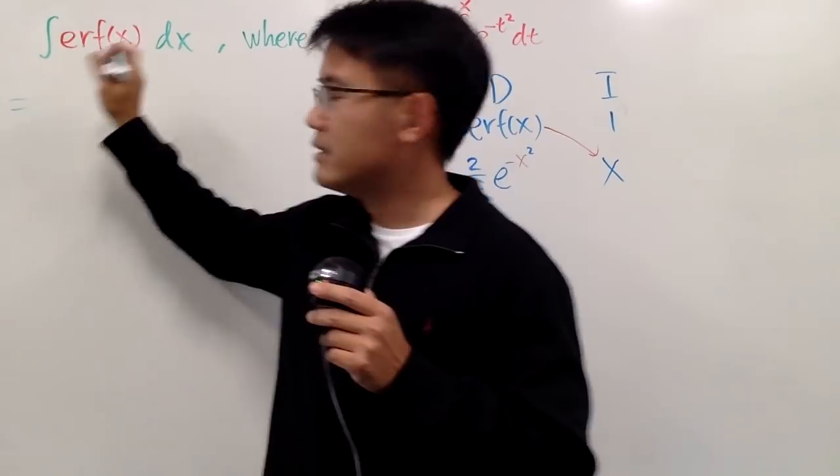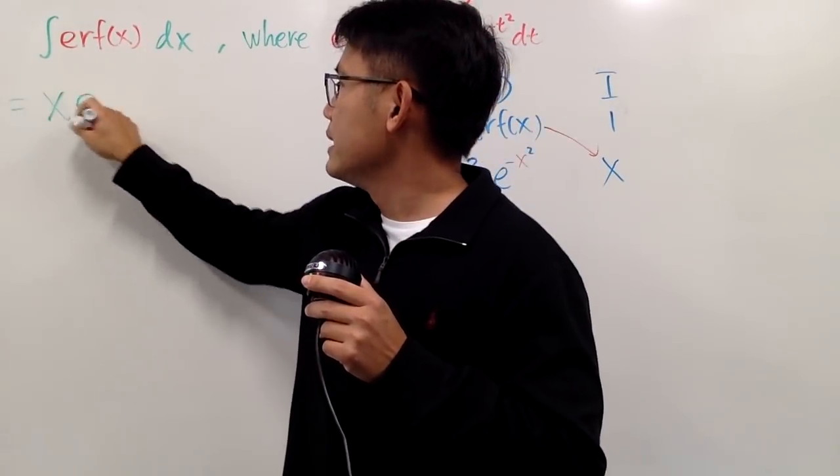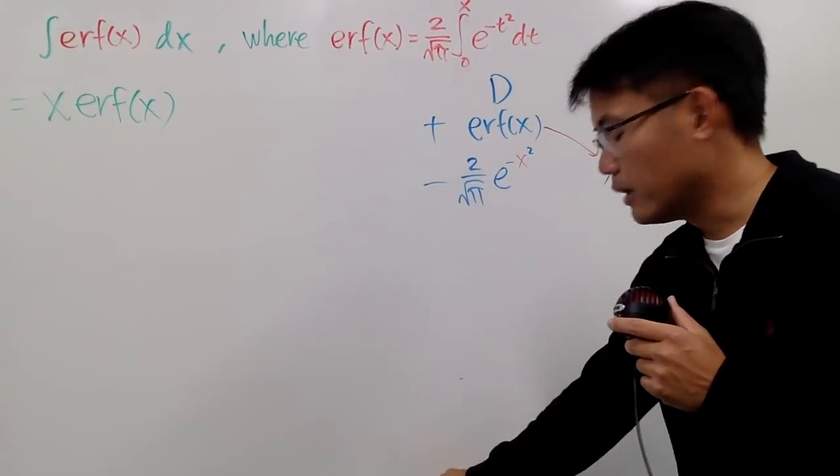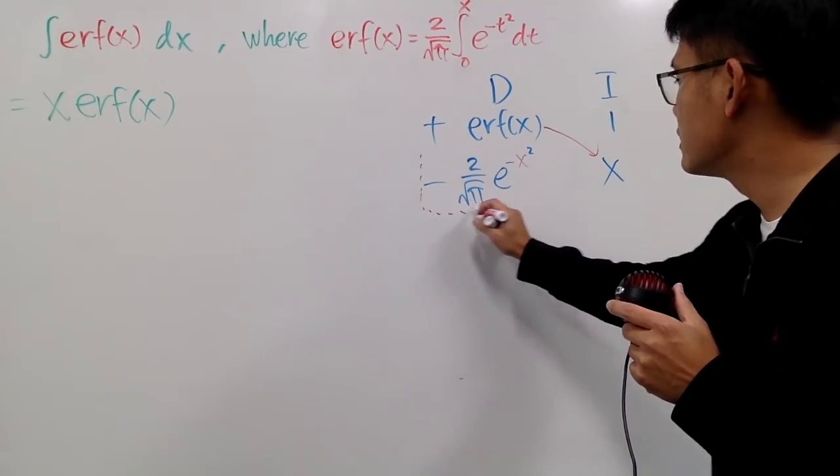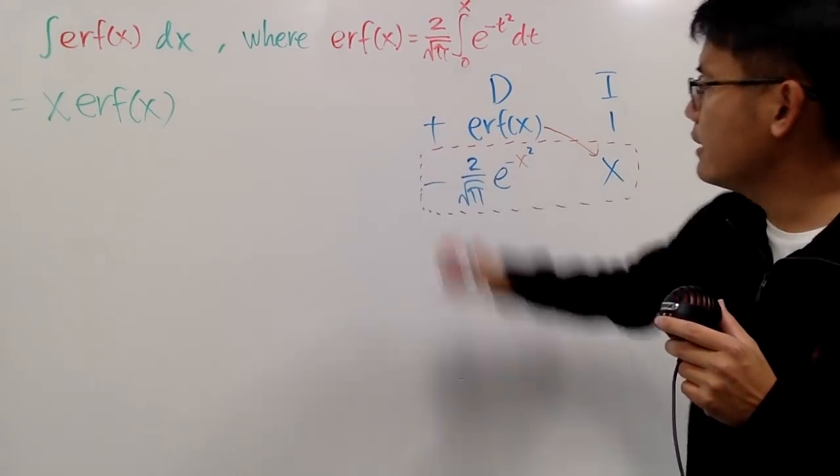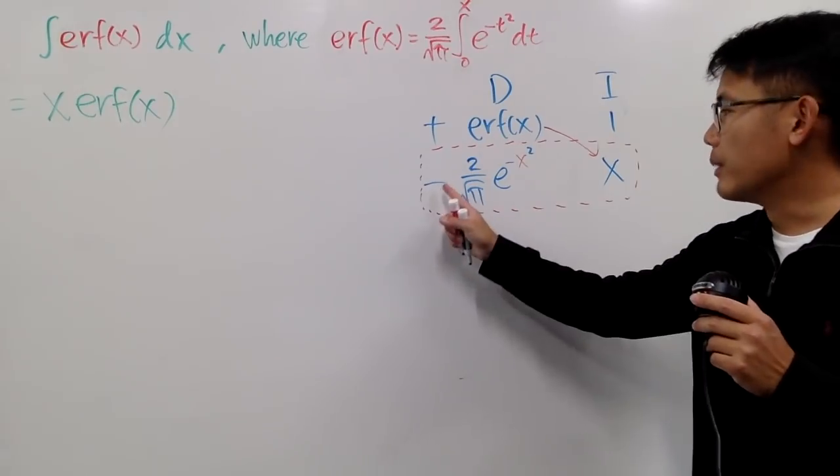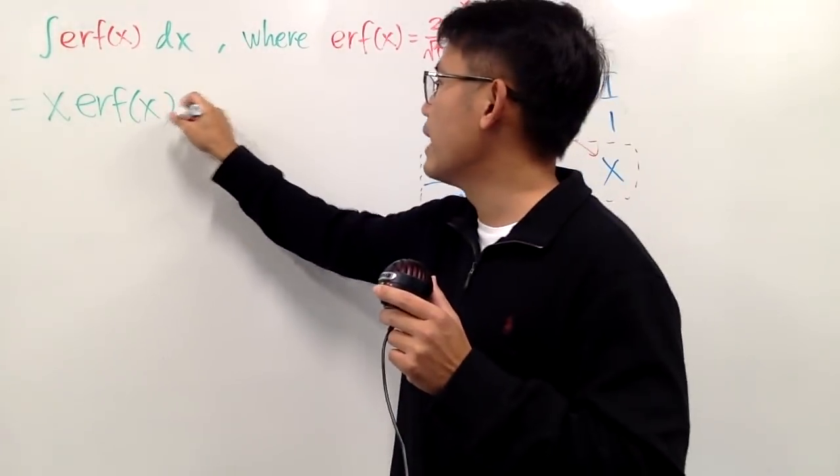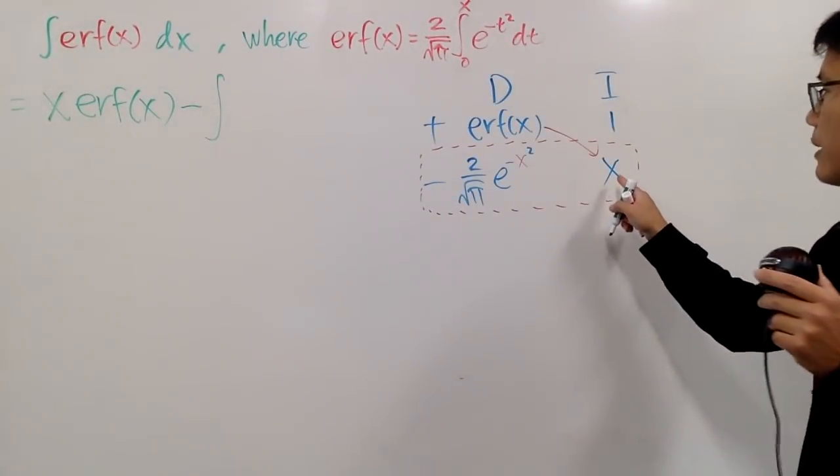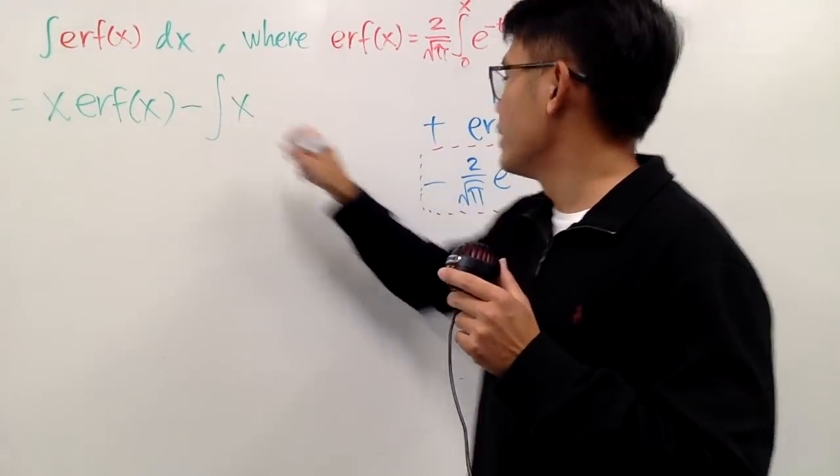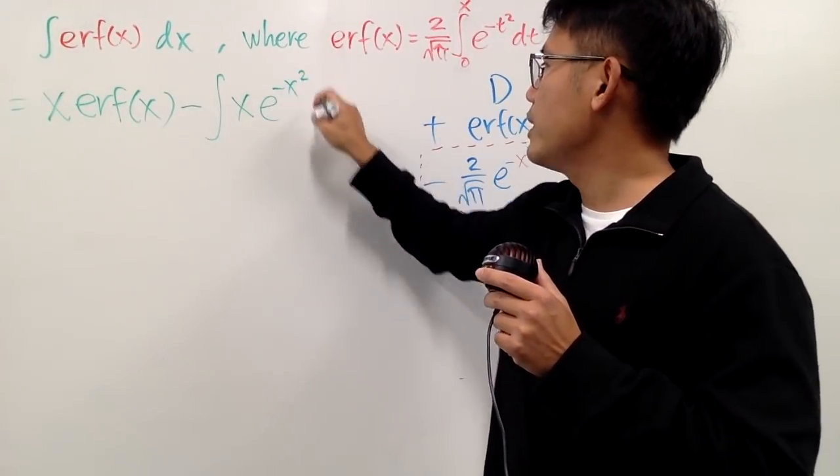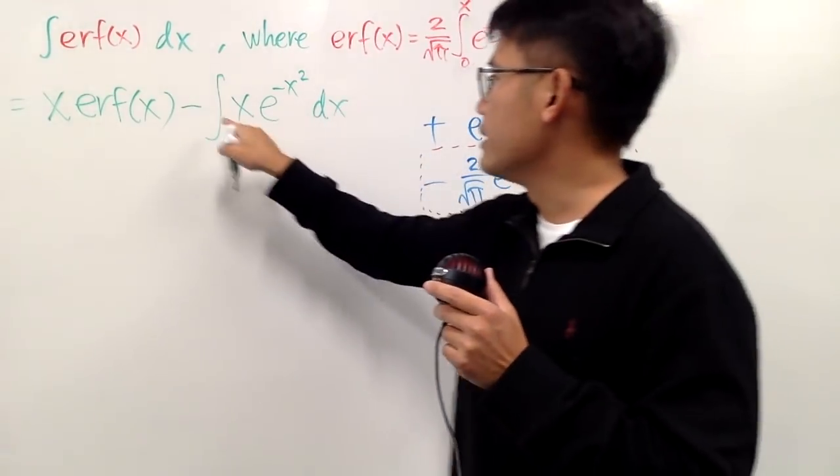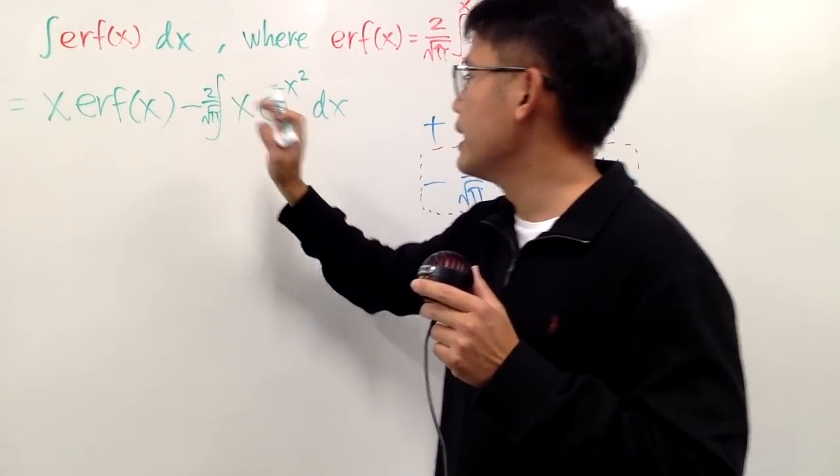So we are talking about this is equal to x times erf of x. And then, for the second integral, don't forget that we look at this row, right? And this right here is still an integral. The product of this is still an integral, and this is a minus, so it's negative. Let me just write that down. Integral, and of course, I can put down the x right here. And then we have the e to the negative x squared dx. And since this is just a constant multiple, let me put that in the front, which is 2 over square root of pi, like that.